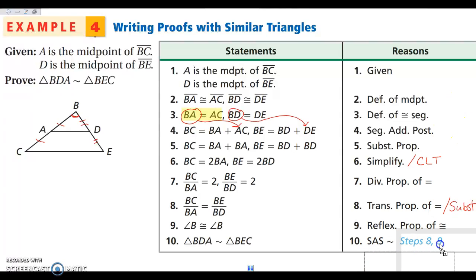So that's side-angle-side similarity for the proof. I know proofs are difficult, but hopefully once you see it, it makes sense. We're bringing some proofs back in this section — not hitting them super hard, but you should be able to handle steps like the definition of a midpoint and the segment addition postulate, since we've seen those over and over. Any questions, please write those down and I will see you in class. Have a great day.